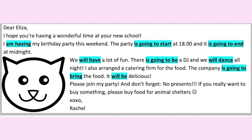Okay, here the highlighted structures are used to express future. Look at the first one: I'm having my birthday party this weekend. It's clear from the time expression that the writer has some plans for the weekend, and the present continuous tense refers to a time later than now. The decision about the time of the party has already been made. The party is going to start at 6 and it's going to end at midnight, so the writer again refers to a future time by using going to. The last structure we see here is will: We will have a lot of fun. There is a prediction here based on the writer's opinion — the writer thinks that they will have a lot of fun at the party.